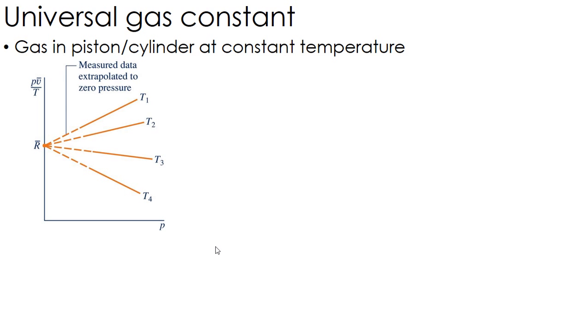We're going to start talking about gases now, and the first thing we want to introduce is an idea called the universal gas constant. So the way this is developed is if you think about a gas, it could be any gas, in a piston-cylinder sort of setup.